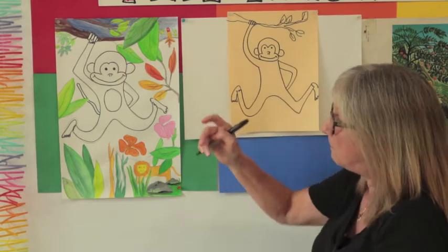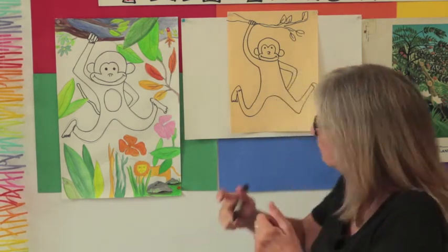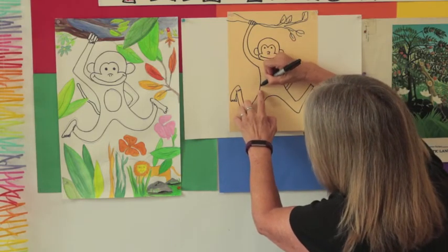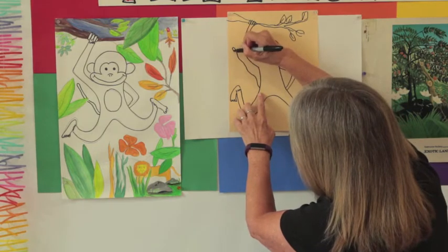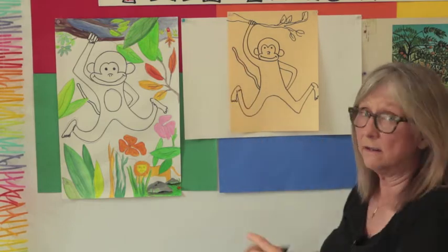I also want to put a tail on this guy. I think a tail is important because we know that monkeys use their tails a lot to swing from branch to branch. So I'm going to do a tail. I'm going to start on the side of his body and make a tail that's kind of skinny but long so that that tail can help him climb if he needs to.